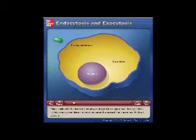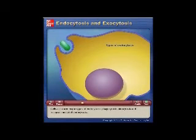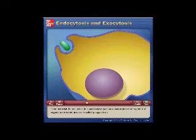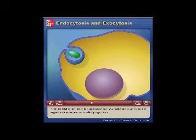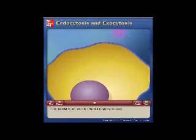Many single-celled eukaryotes employ endocytosis to ingest food particles. In this process, the plasma membrane extends outward and surrounds the food particle. Cells use three major types of endocytosis: phagocytosis, pinocytosis, and receptor-mediated endocytosis. If the material the cell takes in is particulate, such as a bacterium or a fragment of organic matter, the process is called phagocytosis. If the material is liquid, it is called pinocytosis.